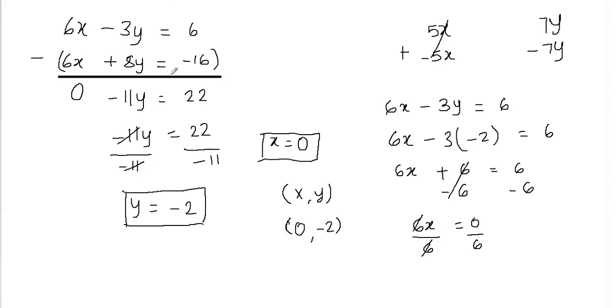This means that when you graph these two equations, the lines will intersect at the point (0, −2), and this is the unique solution for this system of equations.